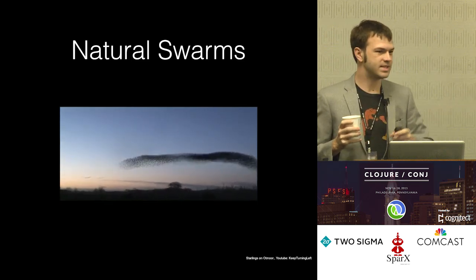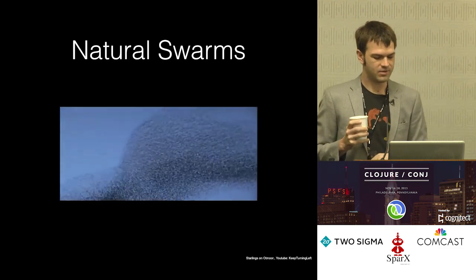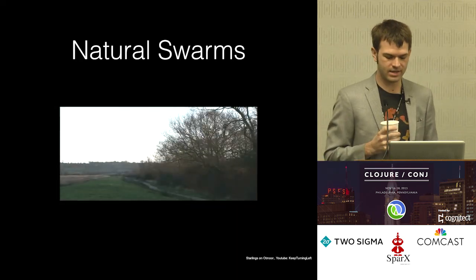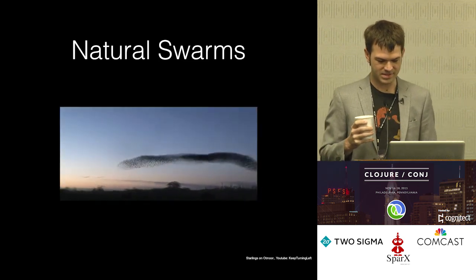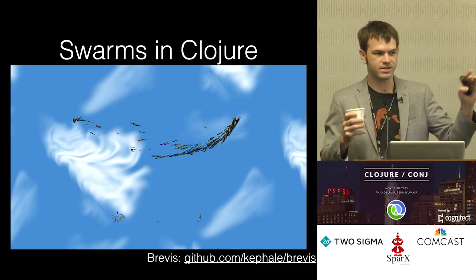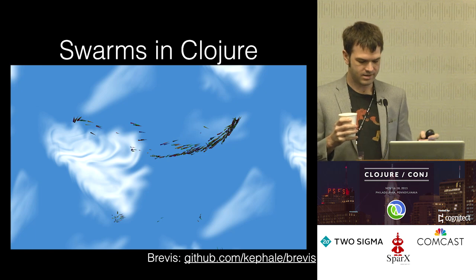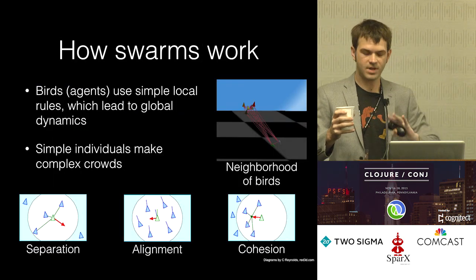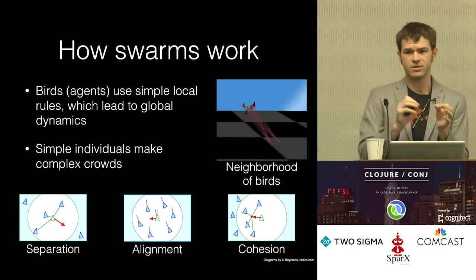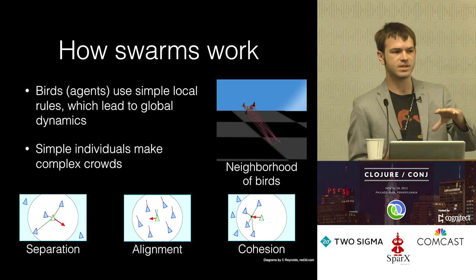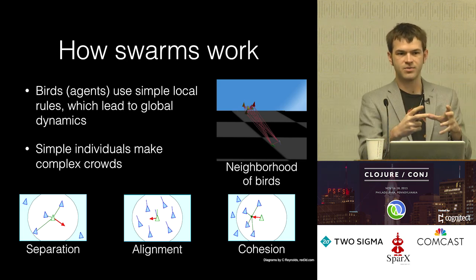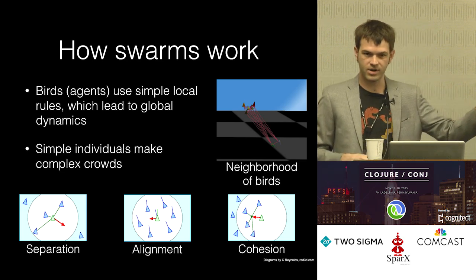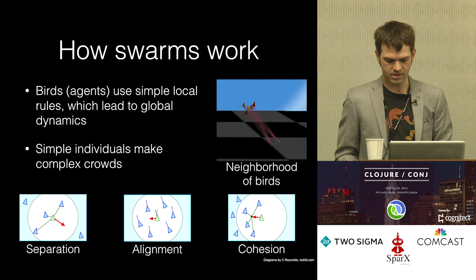Swarms. Many of you have probably seen the video of flocking starlings. The argument is they're using very simple rules in order to form cohesive behaviors where everyone moves collectively. I ported this over from the Breve simulator into Clojure — Breviz — if you want to play with it. Swarms have these very simple behaviors: you weight which direction you go based on your nearest neighbor, the centroid of mass of your neighbors, and alignment — which is important to get the whole flock moving in the same direction. This comes from Craig Reynolds' work on Boids.